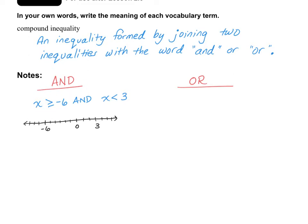If I had this — x is greater than negative 6, and at the same time x is less than 3 — let's take each piece at a time. I'm first going to do x is greater than negative 6 in yellow. So I have a closed circle at 6 and it's going to be going up that way. Now x less than 3 is an open circle at 3 and heading down.